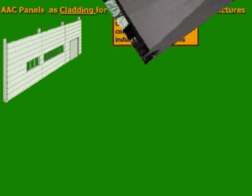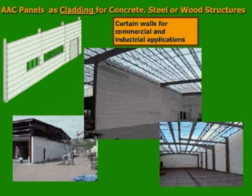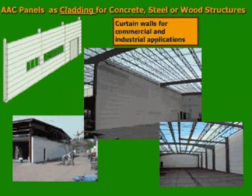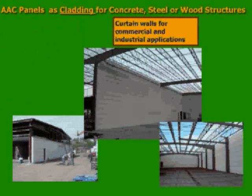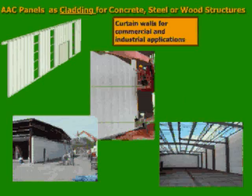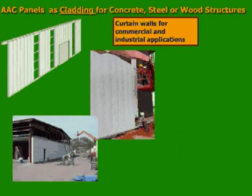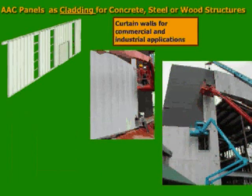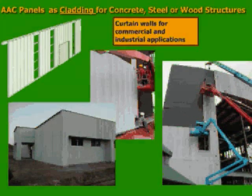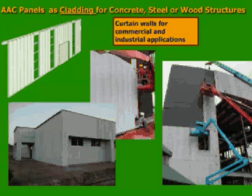AAC panels can be used as cladding for concrete, steel, or wood structures. AAC panels with a maximum length of 20 feet can be used in a horizontal application for cladding of post-beam structures. If the bay span exceeds 20 feet, we use the panels in a vertical direction so that we can span from elevation to elevation beam.